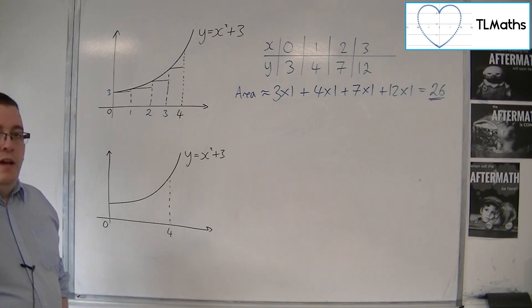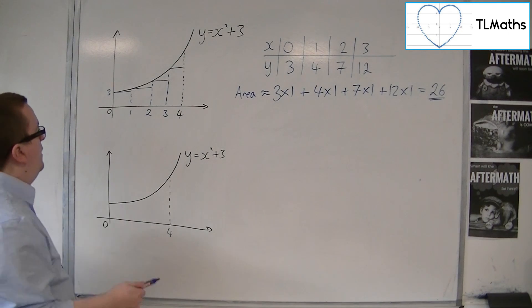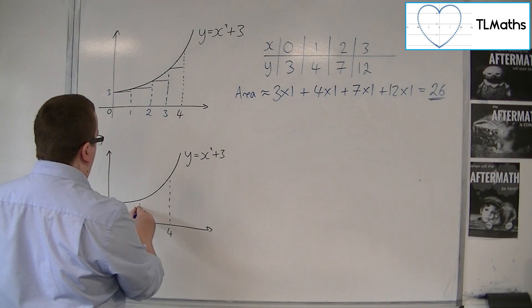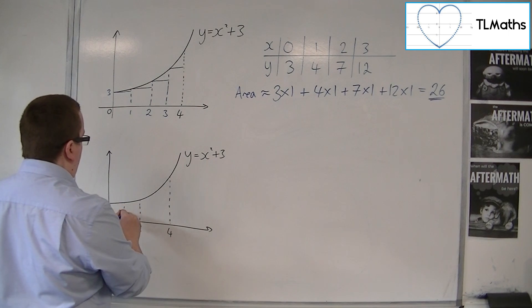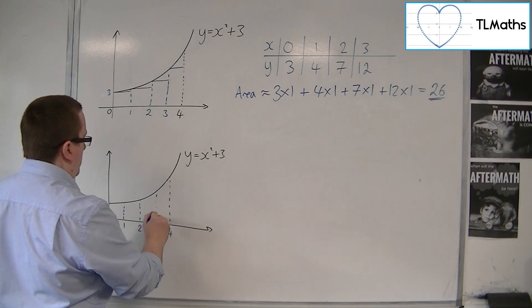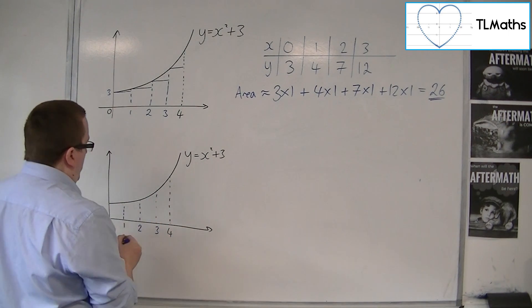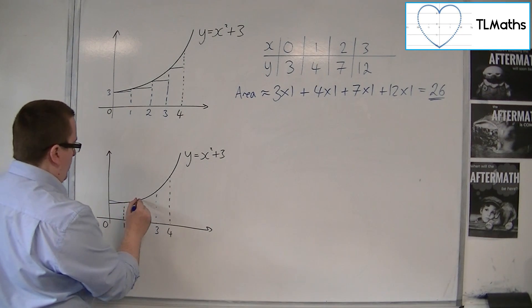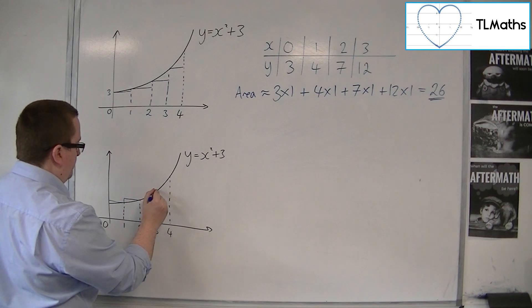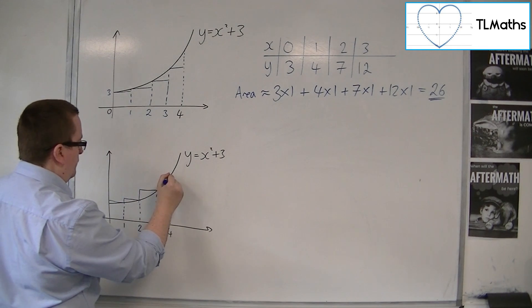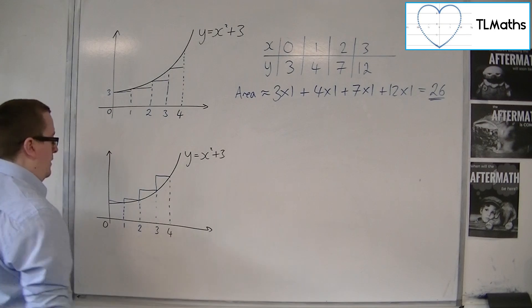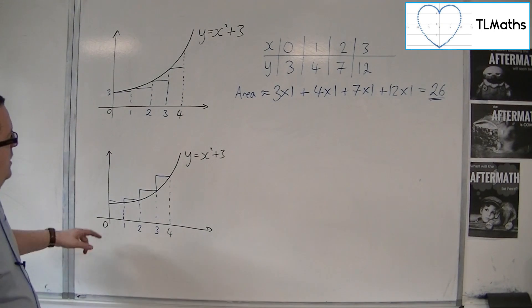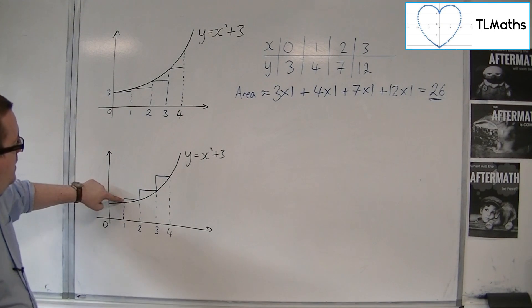So I could have worked it out another way. I could have done it in a similar fashion, still split it up into 0, 1, 2, and 3. But instead, I could look at the rectangles going this way.